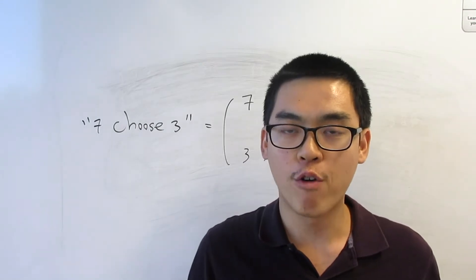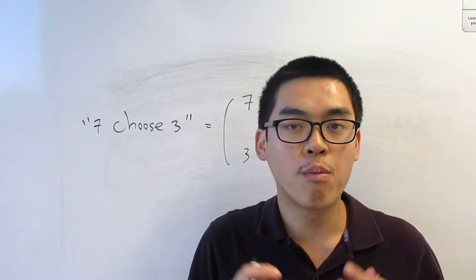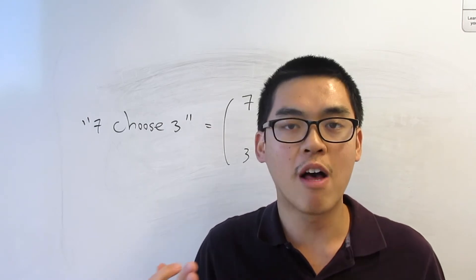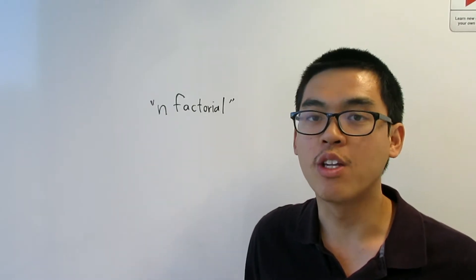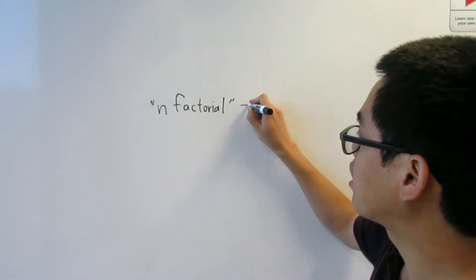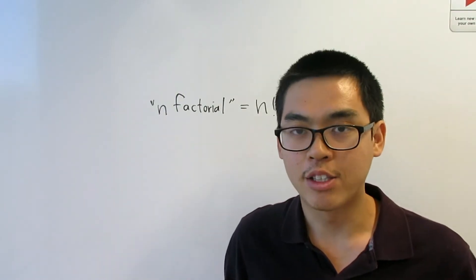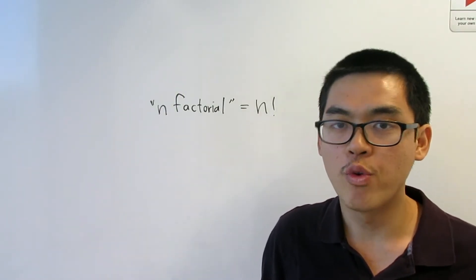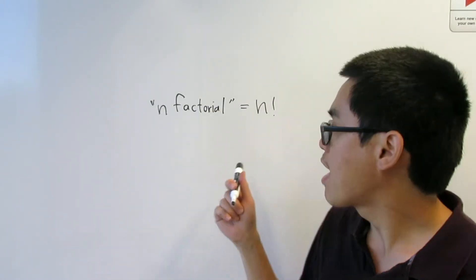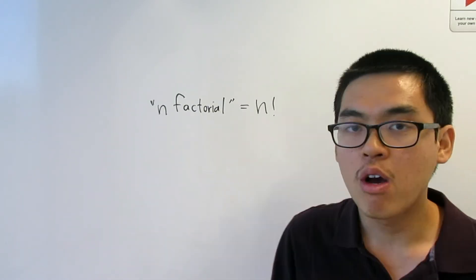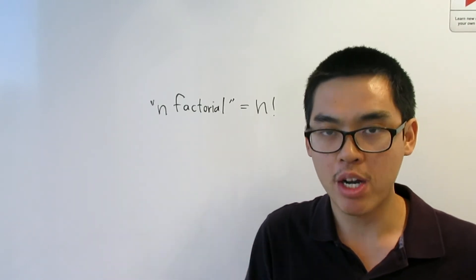Before I go over the formula for N choose K, I need to quickly introduce another formula first: the formula for factorial. N factorial, denoted by N with an exclamation point, is another combinatorial number — meaning it counts the number of ways to do something. In this case, N factorial counts the number of ways to rearrange N numbers in a line.